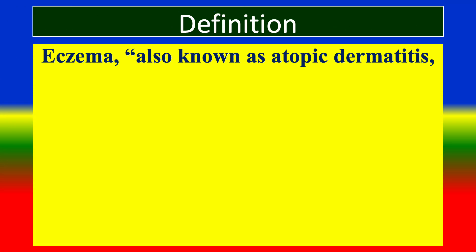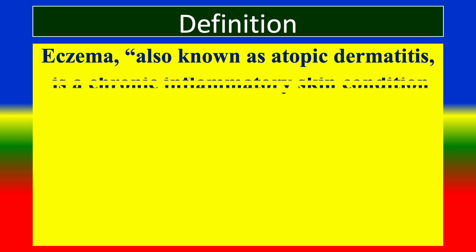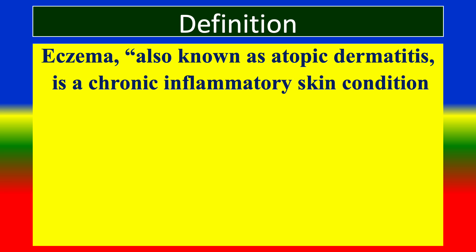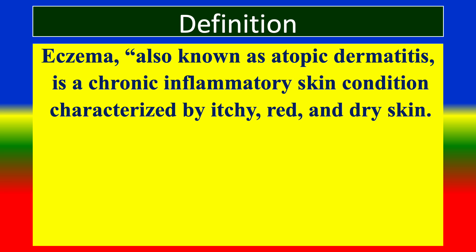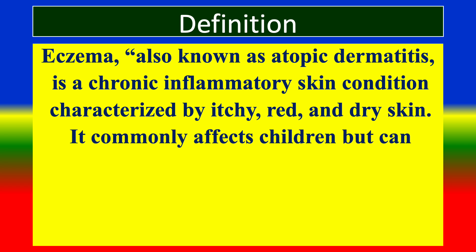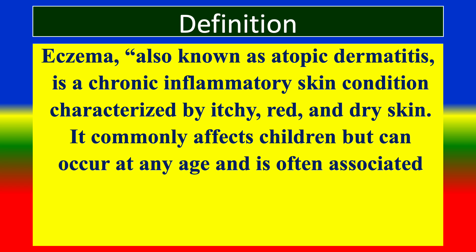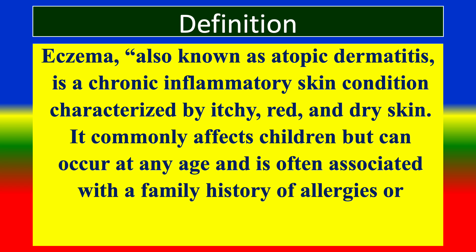Definition. Eczema, also known as atopic dermatitis, is a chronic inflammatory skin condition characterized by itchy, red and dry skin. It commonly affects children but can occur at any age and is often associated with a family history of allergies or asthma.